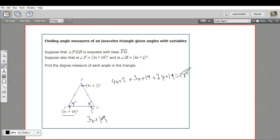All right, let's see if we can combine some like terms. We've got 4 and 3 and 3 x's, that's 10x. And 2 plus 19 plus 19 is 40. So 10x plus 40 equals 180.